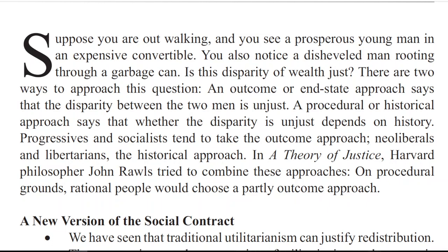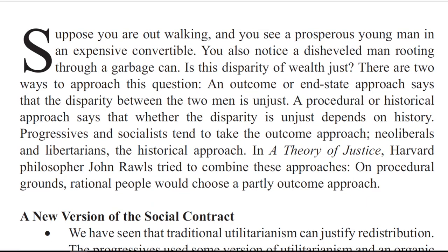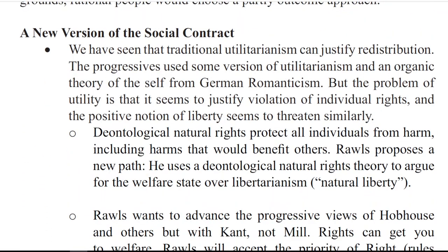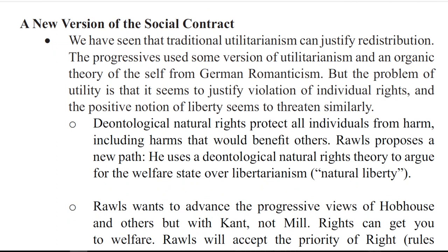In A Theory of Justice, Harvard philosopher John Rawls tried to combine these approaches on procedural grounds. Rational people would choose a partly outcome approach — a new version of the social contract.